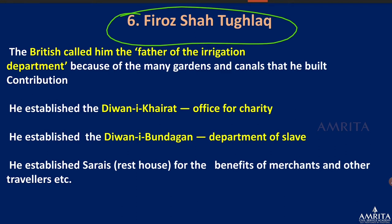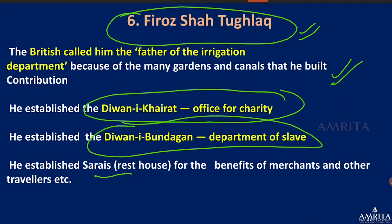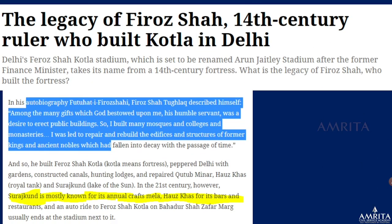Next is Feroz Shah Tughlaq — this topic is covered to give you a window to your static studies from medieval history. This topic came up because, following the demise of Arun Jaitley, the Feroz Shah Kotla Maidan was renamed as the Arun Jaitley Maidan. The British called Feroz Shah Tughlaq the father of the irrigation department because of the many gardens and canals he built. His contributions include the Diwan-e-Khairat (office for charity) and the Diwan-e-Bandgan (department of slaves), and he established sarais for the benefit of merchants and travelers.